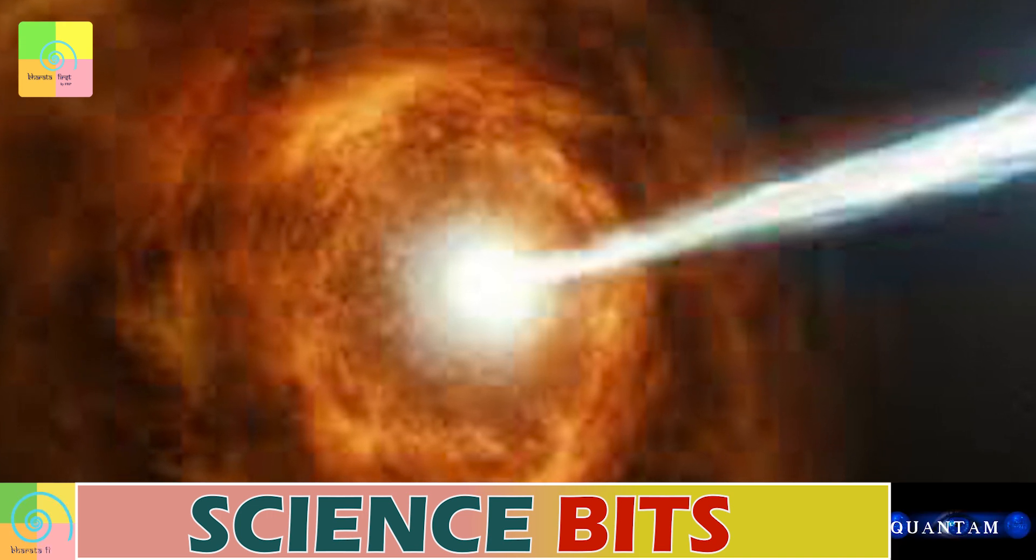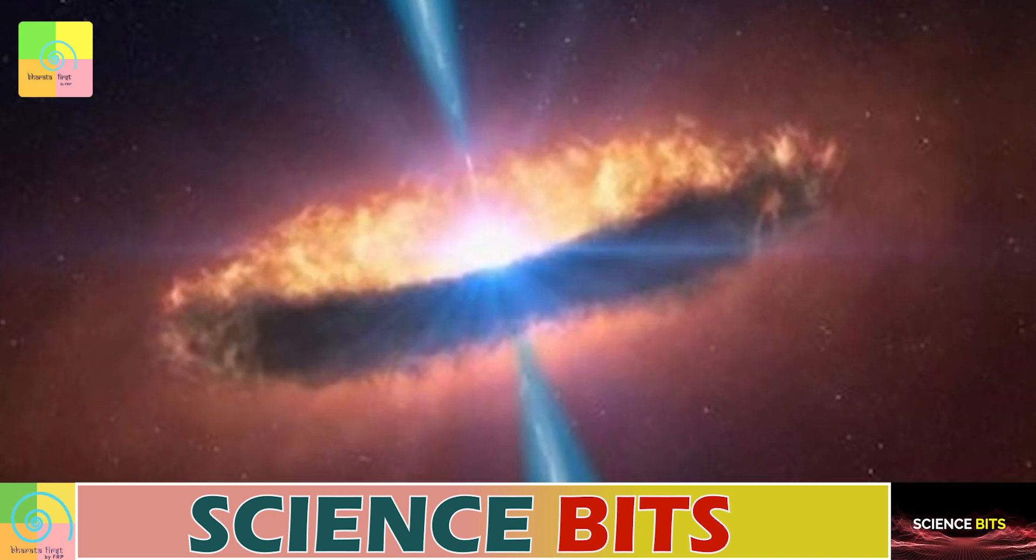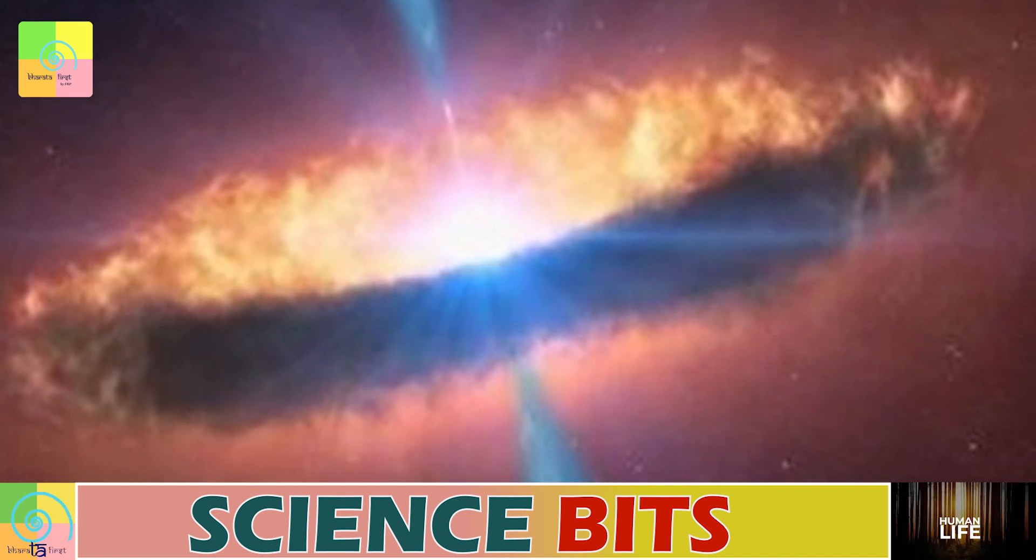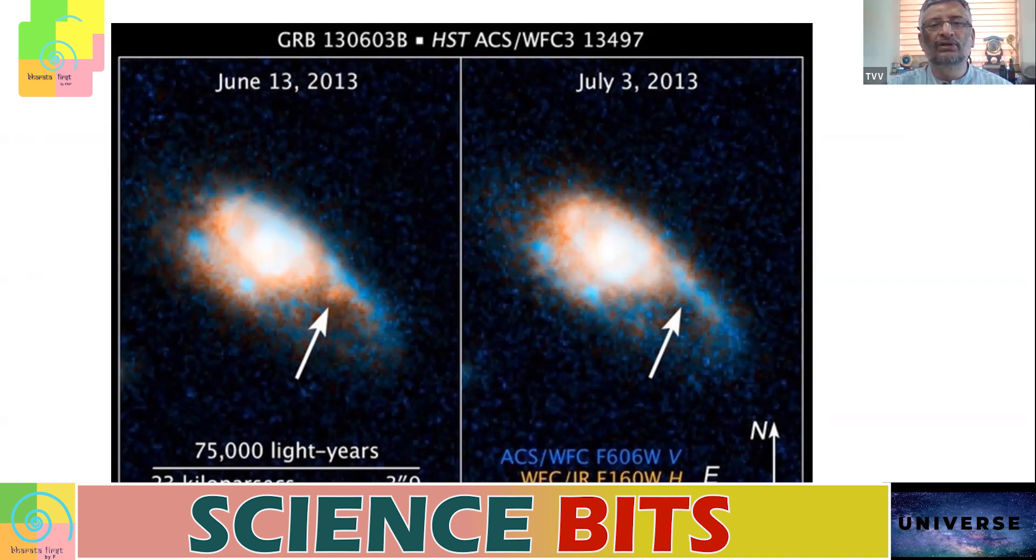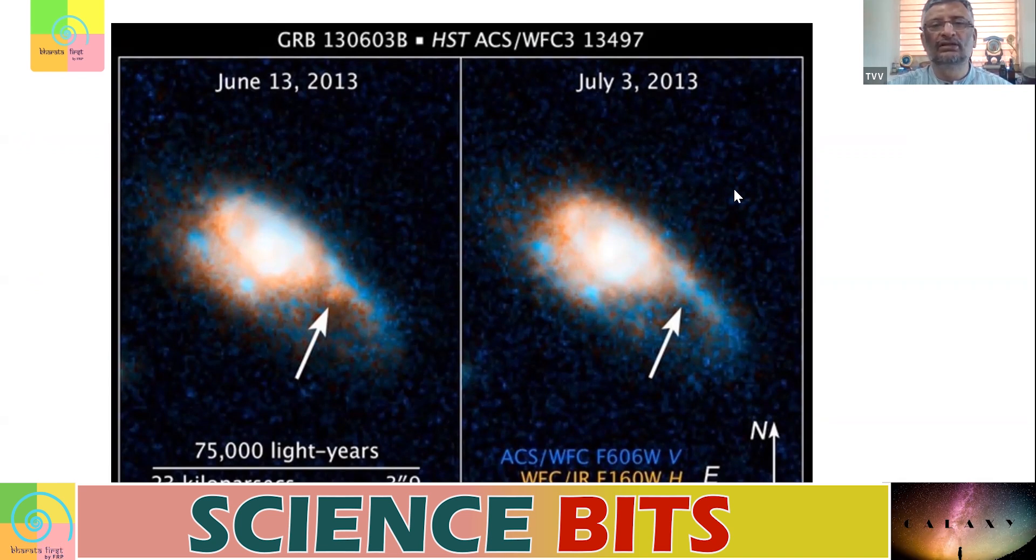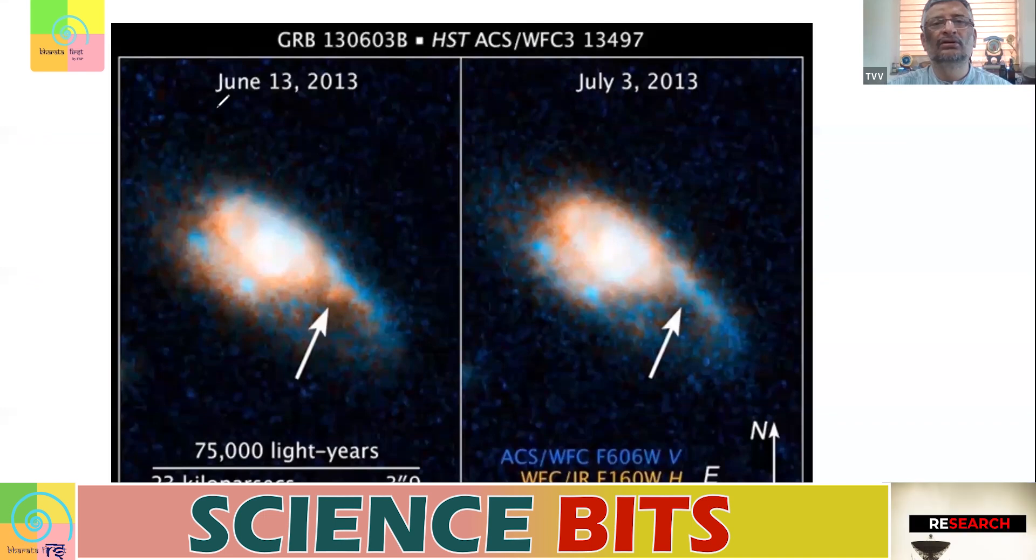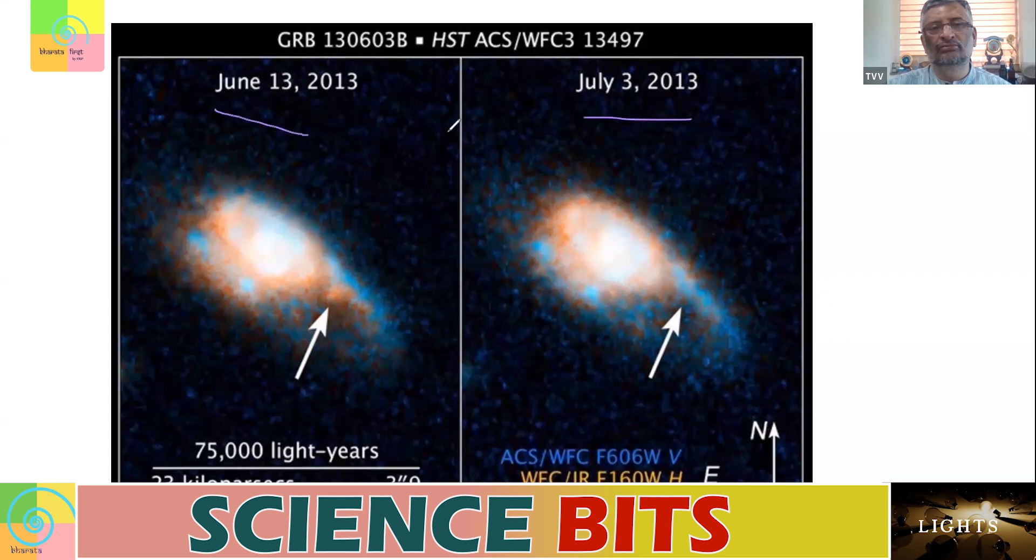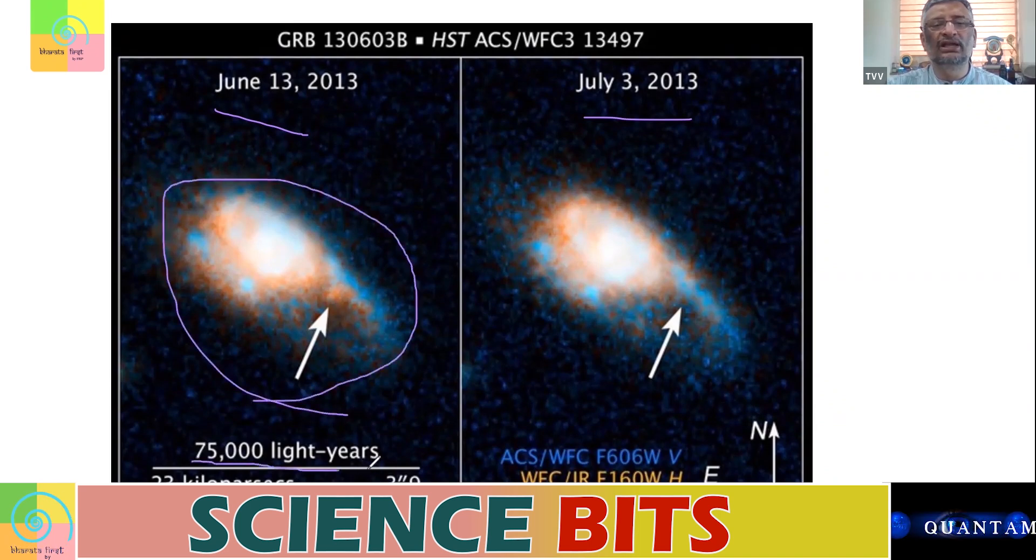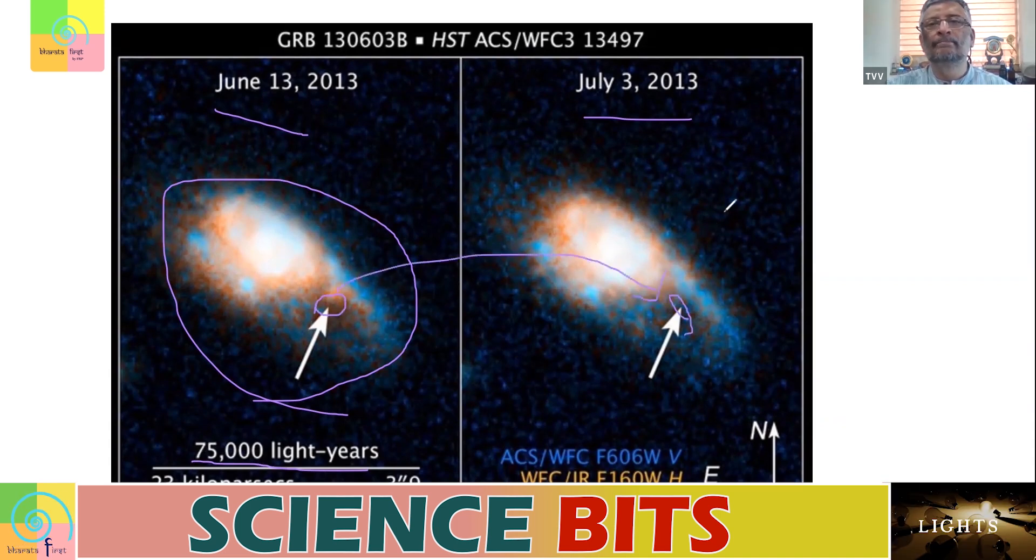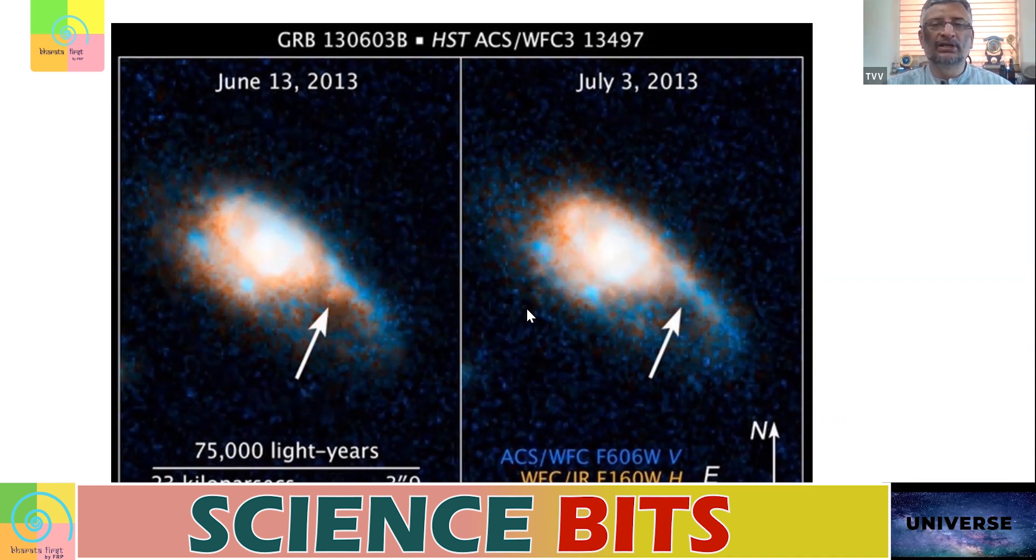So gamma ray burst is like there is a sudden flash of gamma rays, huge quantity for a very short duration. That is why it is called burst. It comes in a burst. If I look at this image, we can see that on June 13th and July 3rd, it is a galaxy which is about 75,000 light years away. There is a sudden burst of gamma ray and that is gone, that is vanished. So there has been a sudden burst of gamma ray which is available for a few days.